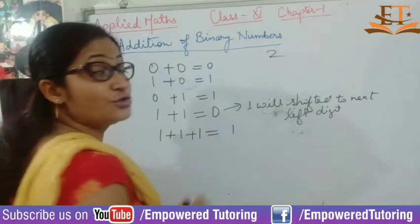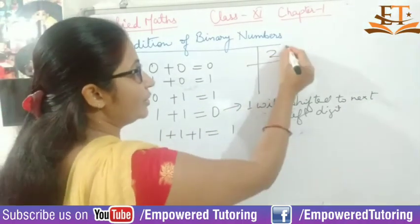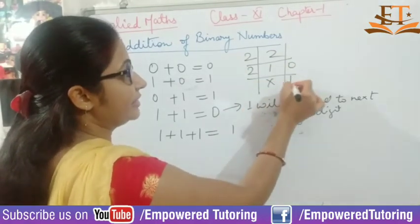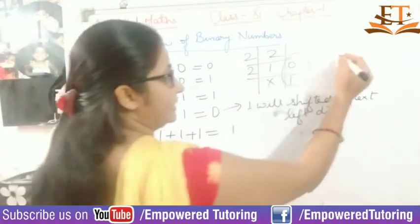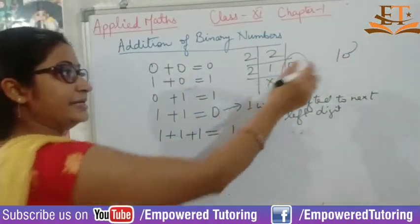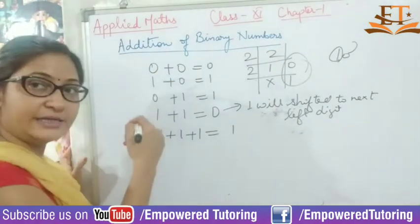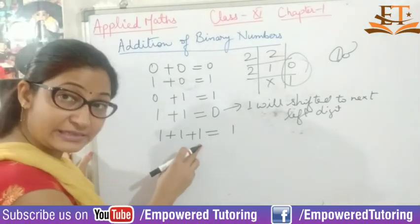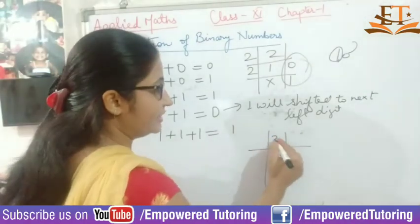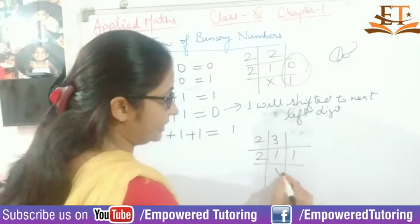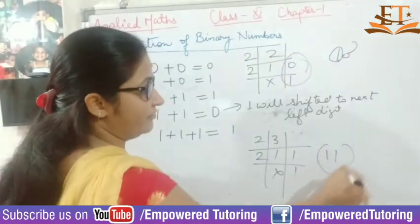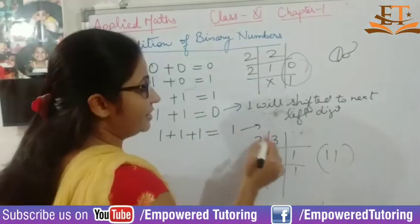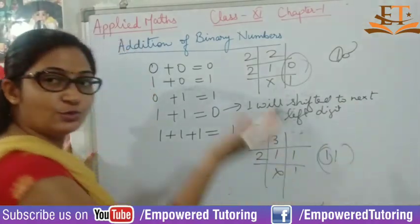1 plus 1 is 2. If you convert 2 to binary you get 10. So out of this 10, the 0 is written in place and the 1 is shifted to the next digit as we do in additions. Similarly, 1 plus 1 plus 1 is 3. Converting 3 to binary gives you 11. So the 1 is written under where you are adding and the other 1 is shifted to the next digit.